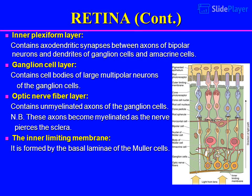Inner plexiform layer: contains axodendritic synapses between axons of bipolar neurons and dendrites of ganglion cells and amacrine cells. Ganglion cell layer: contains cell bodies of large multipolar neurons. Optic nerve fiber layer: contains unmyelinated axons of the ganglion cells; these axons become myelinated as the nerve pierces the sclera. The inner limiting membrane is formed by the basal laminae of the Müller cells.